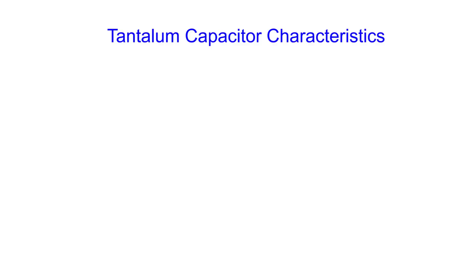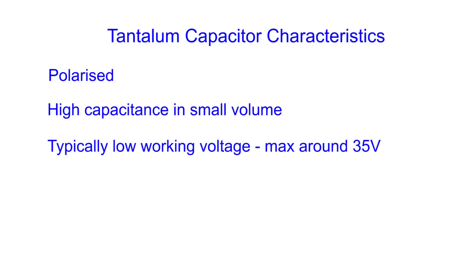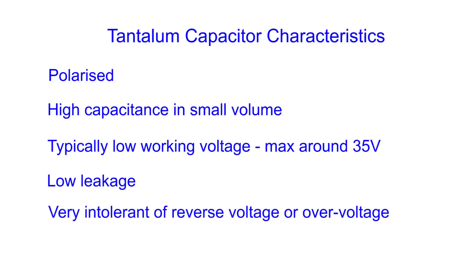In summary, the main characteristics of the tantalum capacitor are that it is polarised, like the electrolytic, requiring it to be fitted into the circuit in a particular way. They have a high level of capacitance in a very small volume, making them ideal for many of today's miniaturised pieces of electronic gadgetry. They're only used in low voltage applications; typically maximum working voltages available are around 35 volts or a little more. Fortunately they have a low leakage level. What they don't like is reverse voltages or over-voltages — they can explode if these are exceeded. And they cannot take high ripple currents, so they're not used for power supply smoothing.